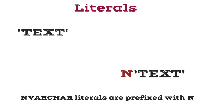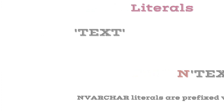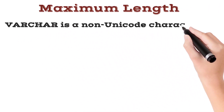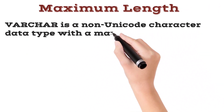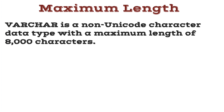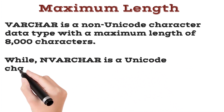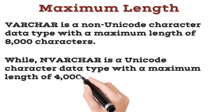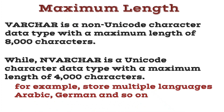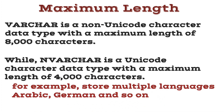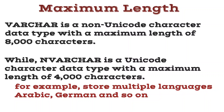VARCHAR literals are enclosed in single quotes, while NVARCHAR literals are prefixed with N. VARCHAR is a non-unicode character data type with a maximum length of 8000 characters, while NVARCHAR is a unicode character data type with a maximum length of 4000 characters, used to store unicode characters — for example, languages like Arabic, German, and so on.